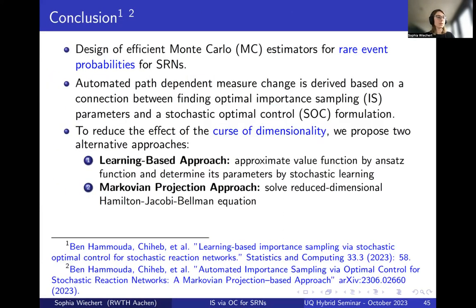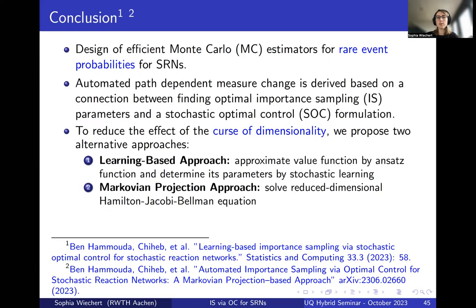In summary, we designed an efficient Monte Carlo estimator for rare events in stochastic reaction networks via automatic path-dependent measure changes combining importance sampling and stochastic optimal control. We addressed the curse of dimensionality with two approaches: the learning-based approach using an ansatz function and stochastic optimization, and the Markovian projection approach projecting to a lower-dimensional process to solve a lower-dimensional Hamilton-Jacobi-Bellman equation and projecting the parameters back to the full-dimensional system. Thank you for your attention — I'm happy to answer any questions.